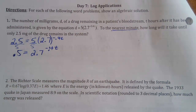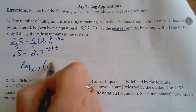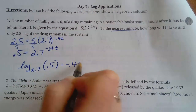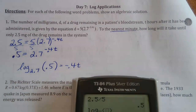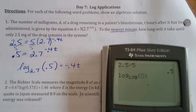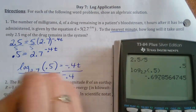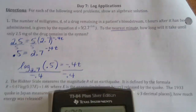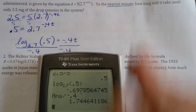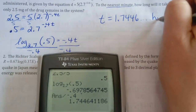So we have to use logs. We turn it into a log: log base, answer, power. So log base 2.7 of 0.5 — we take that answer and divide it by negative 0.4. That means T is approximately 1.7446 hours.